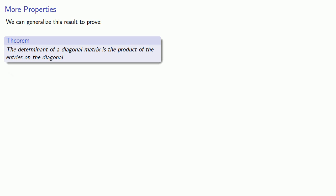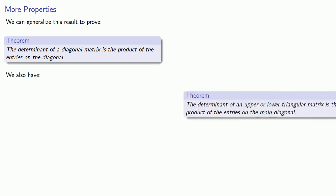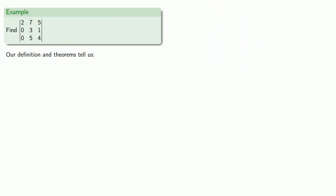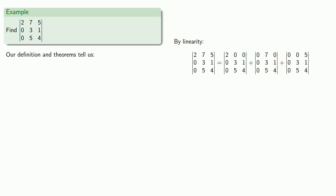In fact, we can go further: the determinant of an upper or lower triangular matrix is also the product of the entries along the main diagonal. Now we're ready to do an important example. Our linearity property allows us to find the determinant of this matrix as the sum of the determinants of three matrices — we've taken our first row and broken it apart into [2, 0, 0], [0, 7, 0], and [0, 0, 5], and importantly, everything else stays the same.